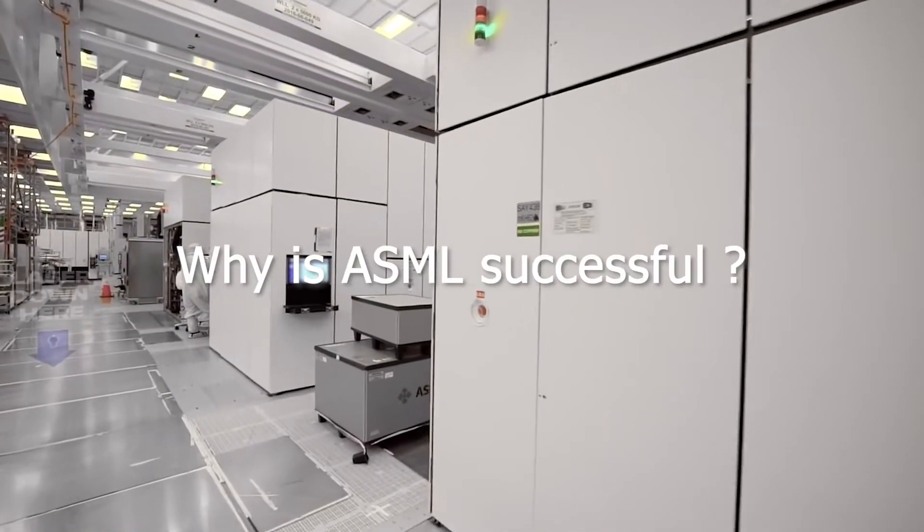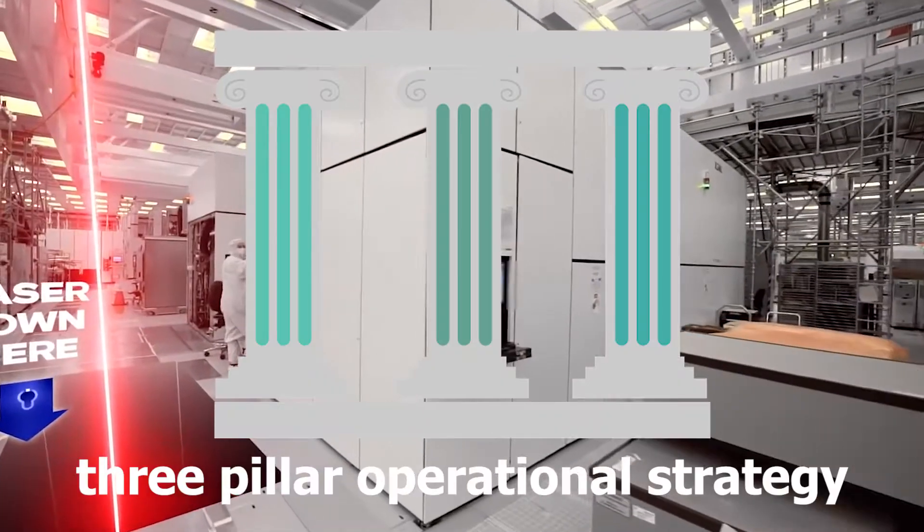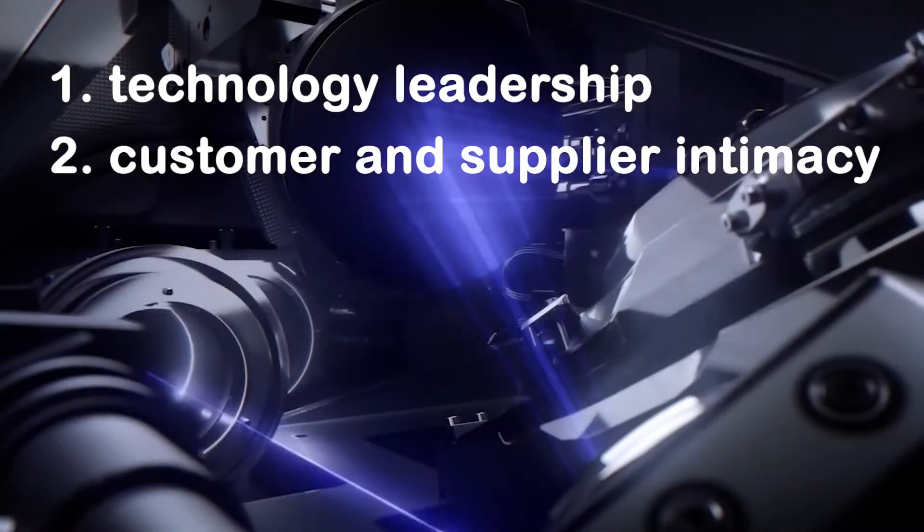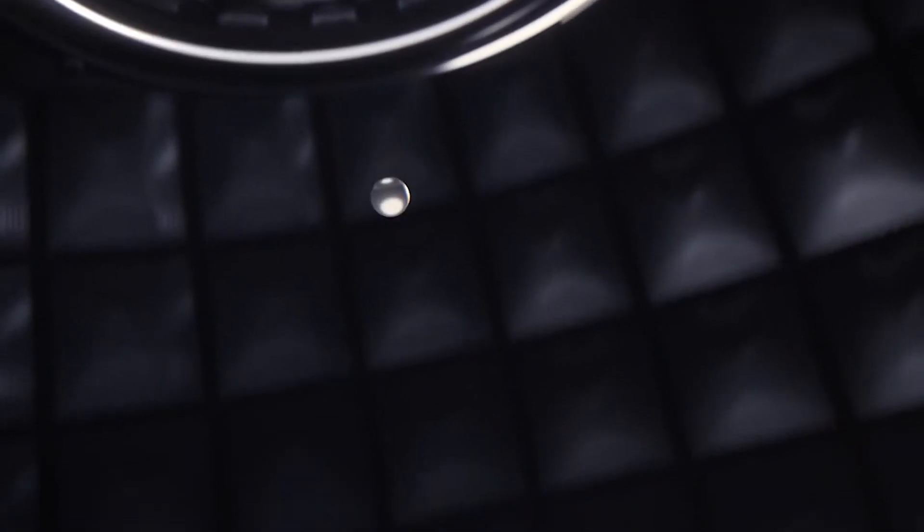Why is ASML successful? The key to ASML's success is its execution of the business strategy through a three-pillar operational strategy: technology leadership, customer and supplier intimacy, and entrepreneurial people. First, technological leadership is reflected in ASML's commitment to high R&D spending.